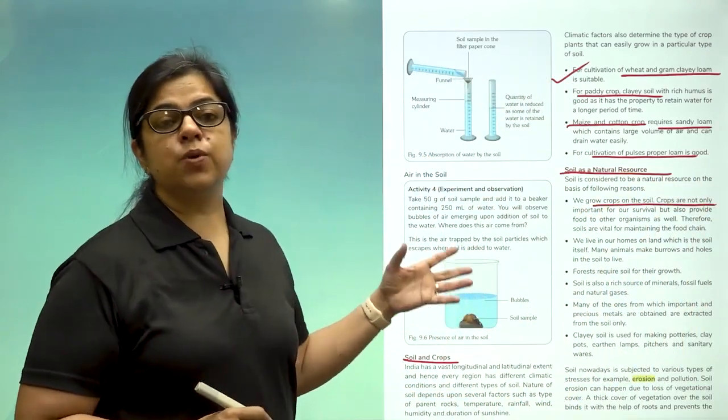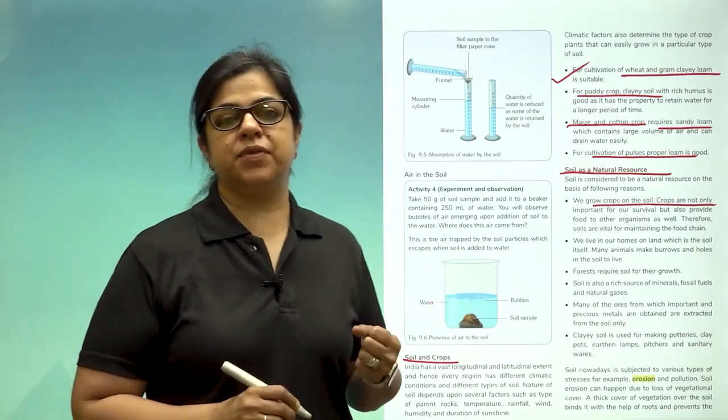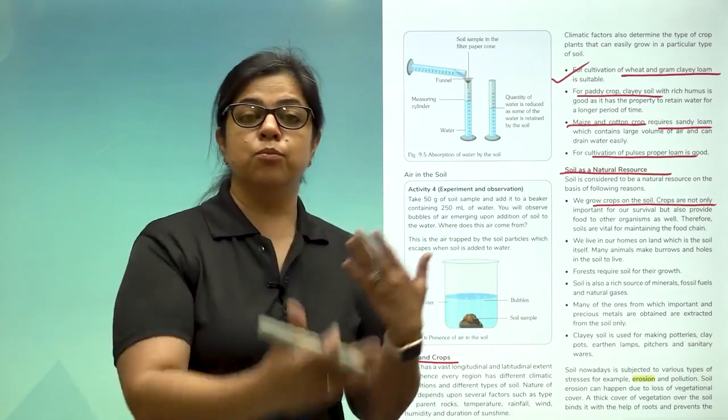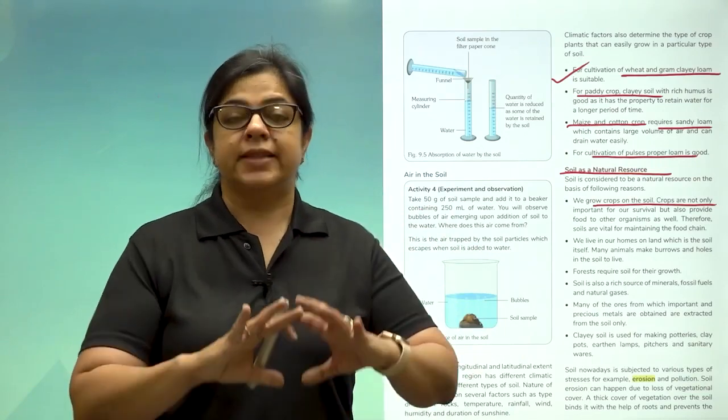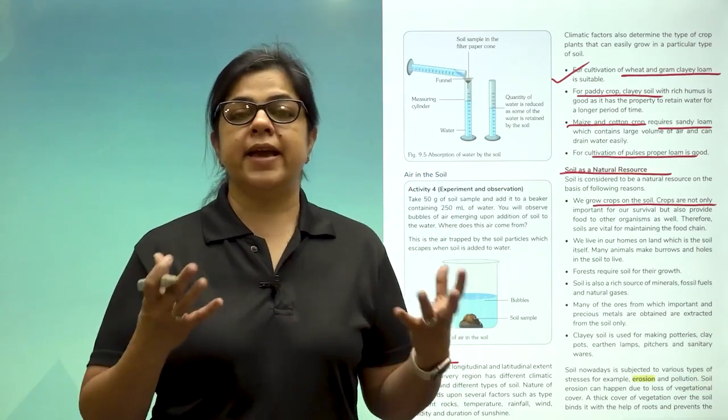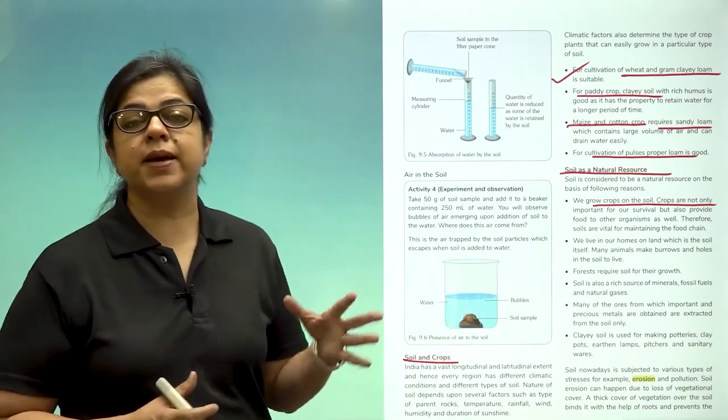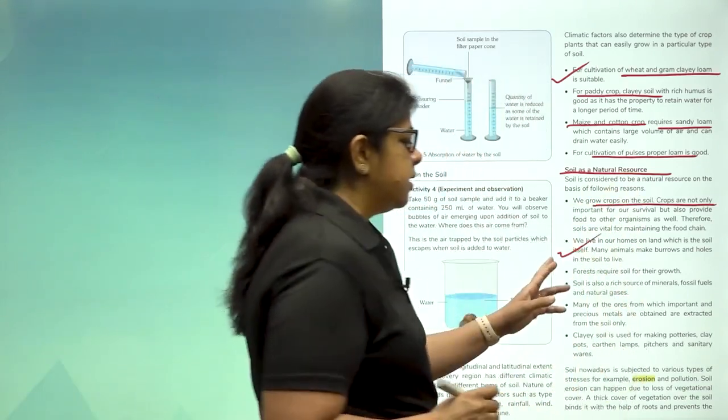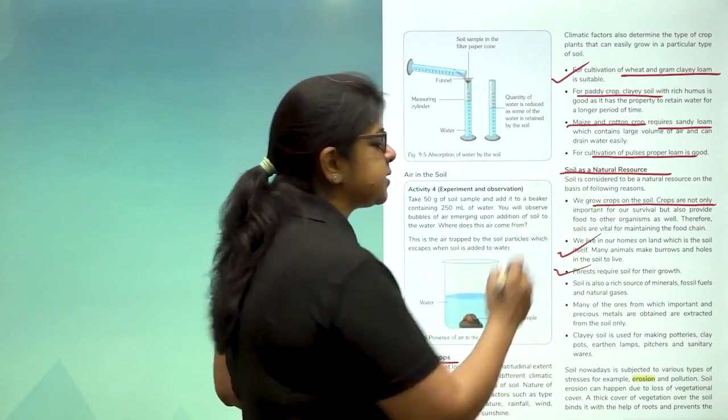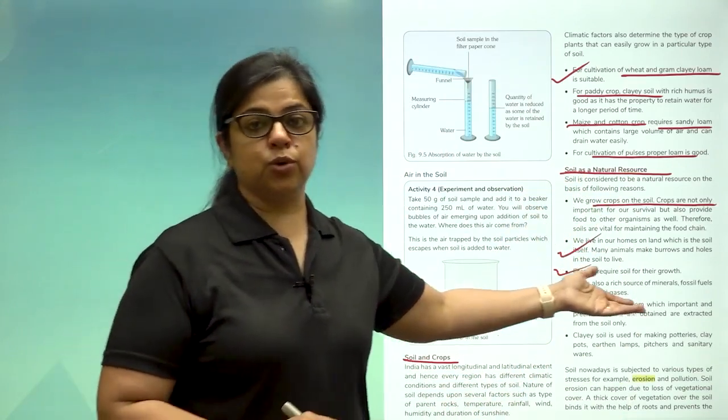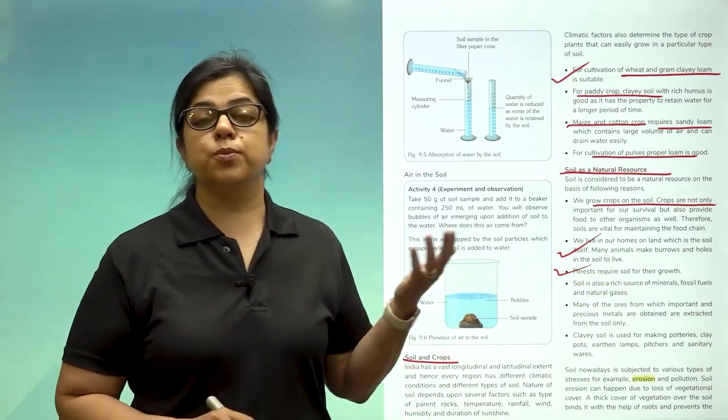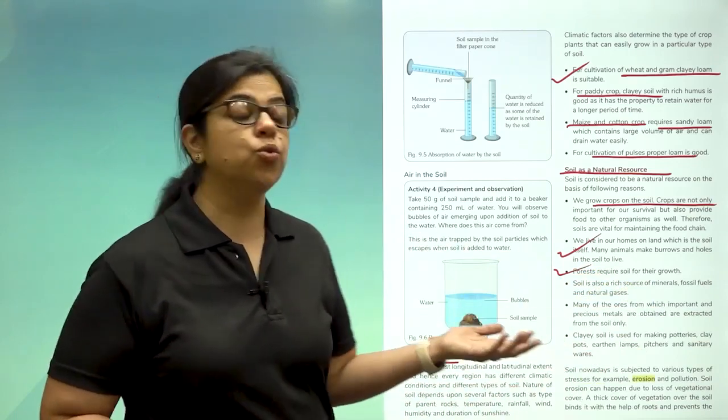Soil also has many animals living in it. We know that earthworms for one live in the soil and when they move up and down the soil, they actually provide air to the soil. So that is why they are called farmer's friends. Then the third is that forests also require soil for their growth. And if there are no forests on earth, there is going to be no oxygen. There is going to be no transpiration and hence no rain.